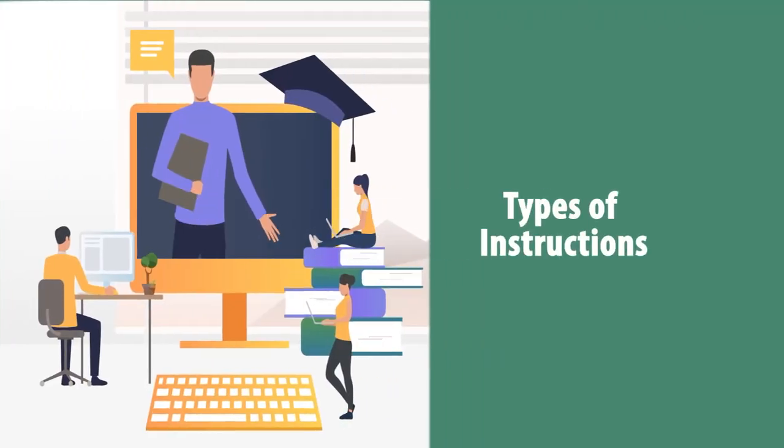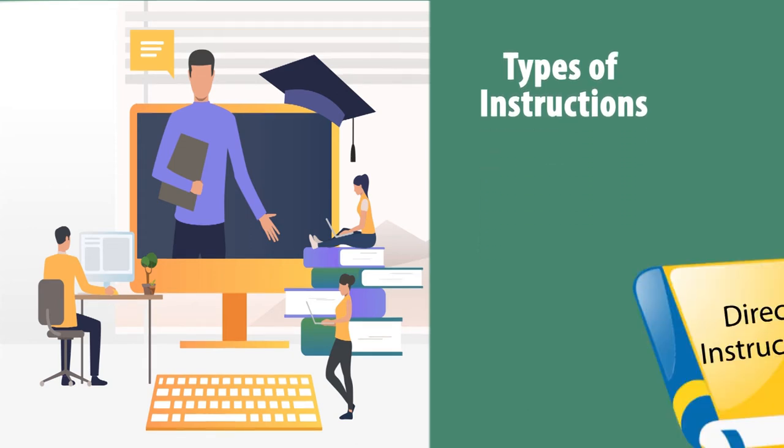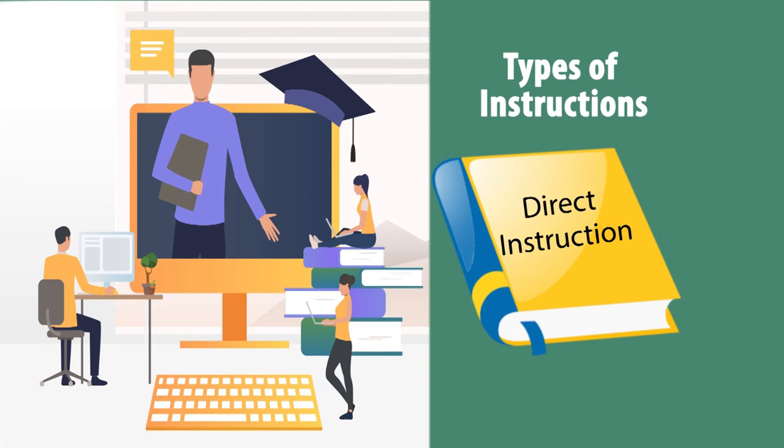If you see different types of instructions which teachers generally give in the classroom, there are five types. First, we call it direct instruction. What is direct instruction? An instruction given by the teacher to the learner — the teacher decides everything: what is to be taught, how he or she will teach, what will be the method, media, learning outcomes, and how it will be assessed. Everything is decided by the teacher in advance, and the teacher directs learners to perform accordingly. Such instructions are called direct instructions and are very teacher-centric in nature.